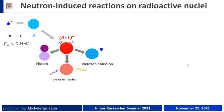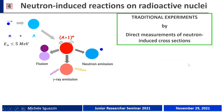In traditional experiments, what is done is to measure directly the neutron-induced reaction cross-section. This means that a neutron beam is provided using a source and made to interact with a heavy target nucleus. In this way, we produce the compound nucleus, and then the decay of this compound nucleus is observed by detecting, for example, the fission fragments, the gamma rays, or the neutrons.